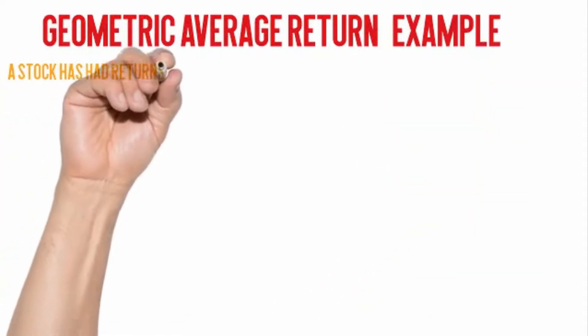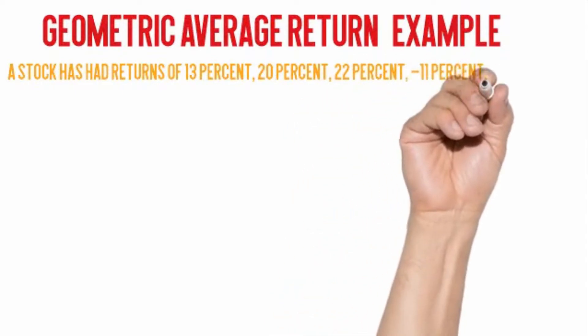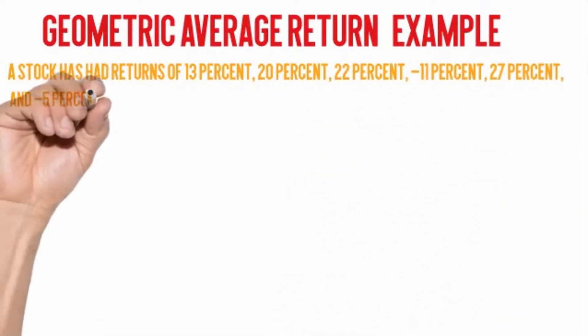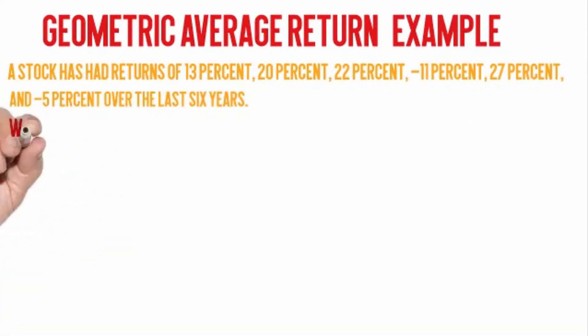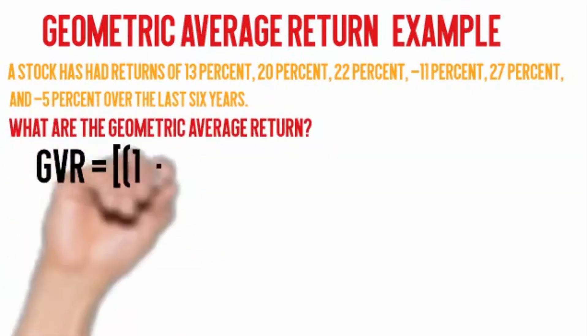Let me explain the geometric average return with help of a simple example. A stock has had returns of 13%, 20%, 22%, -11%, 27%, and -5% over the last 6 years. What are the geometric average return?